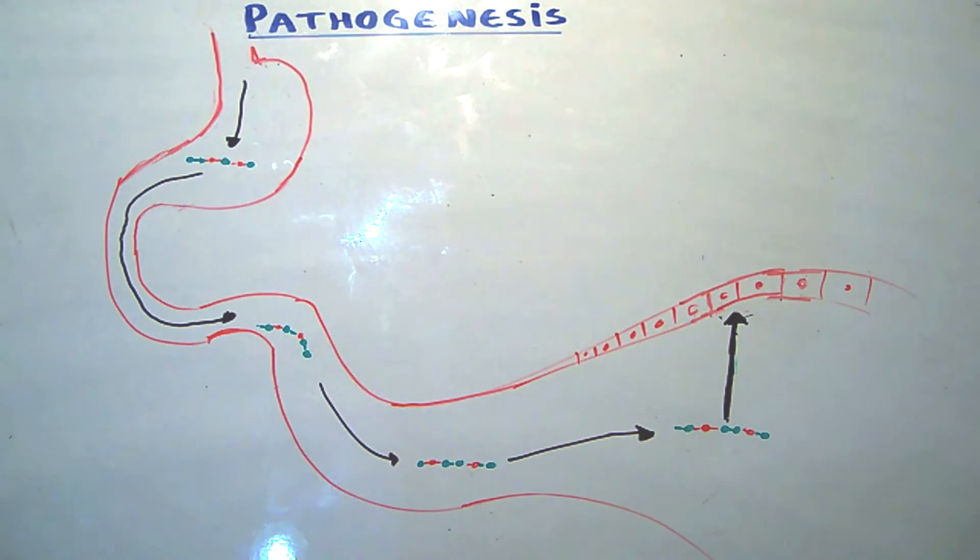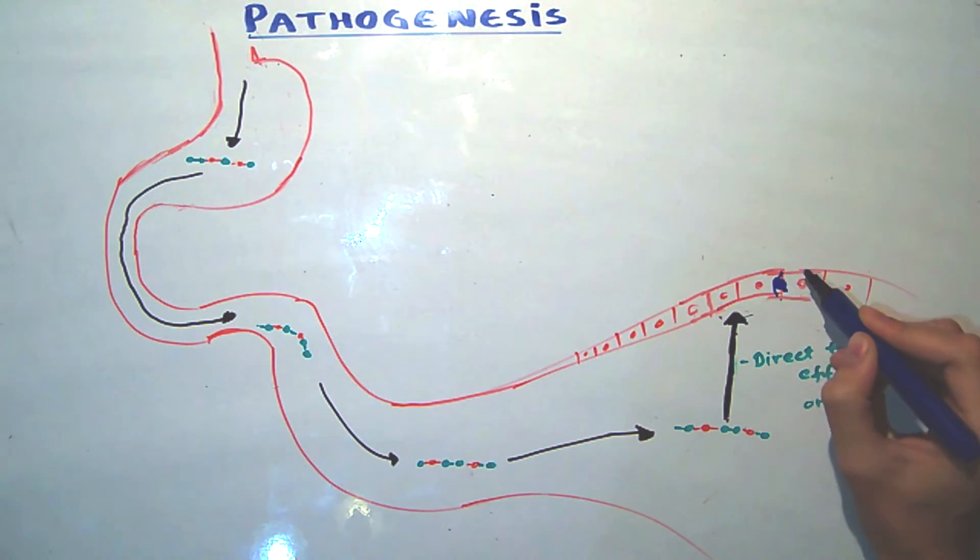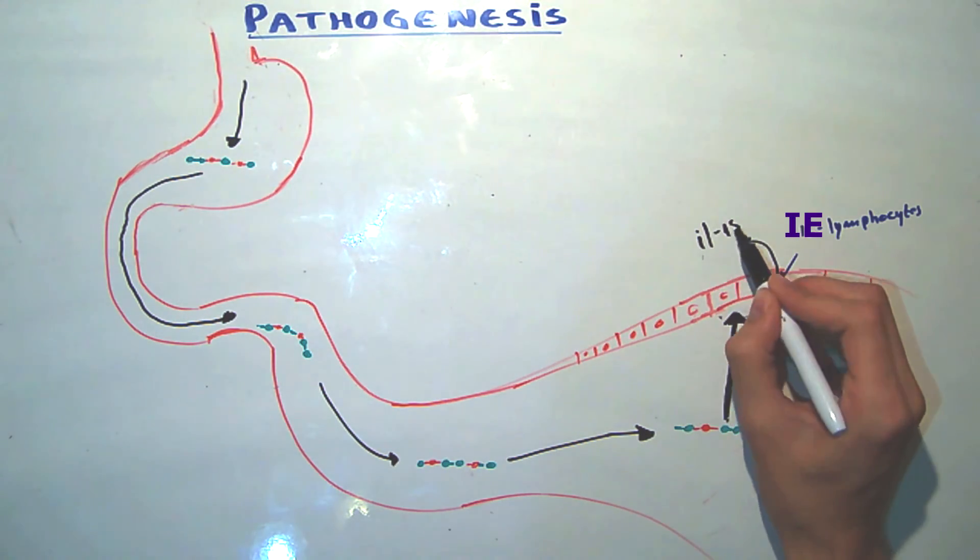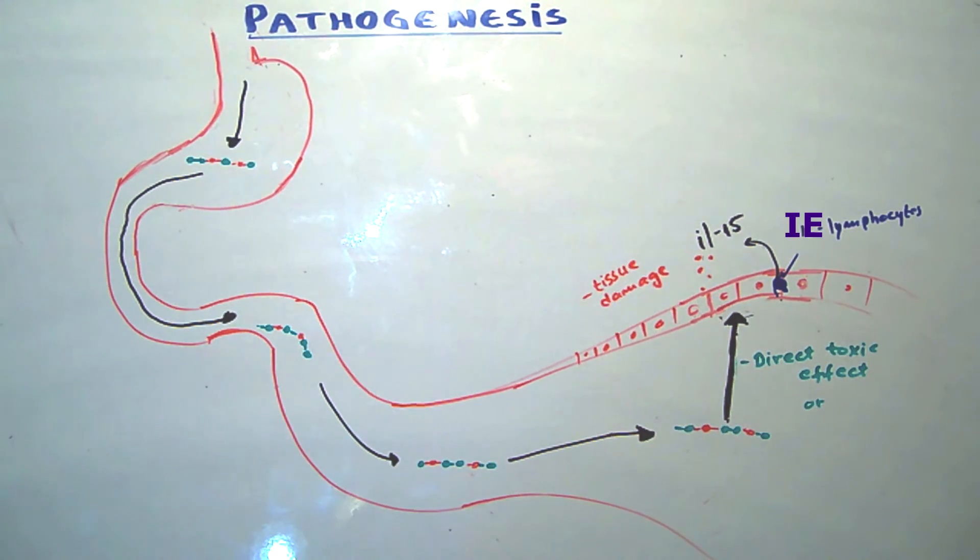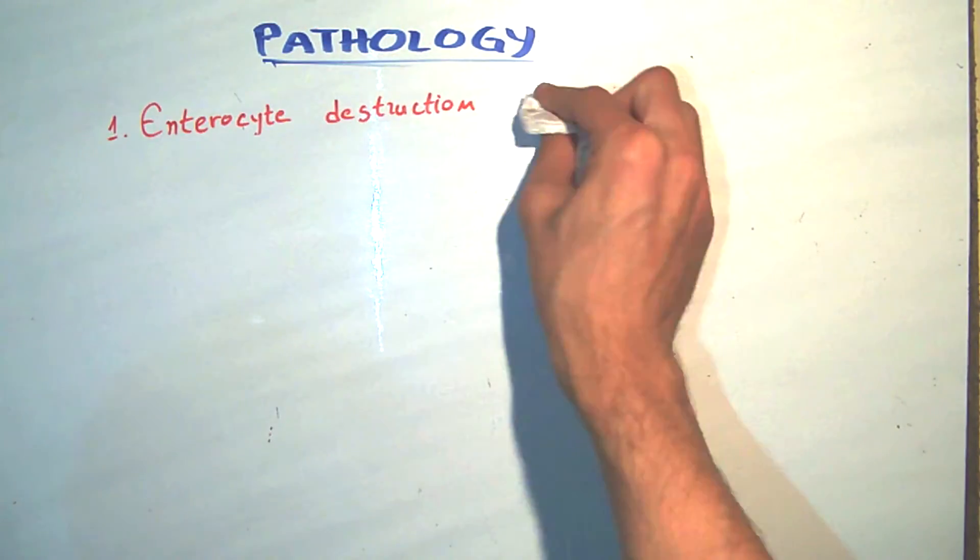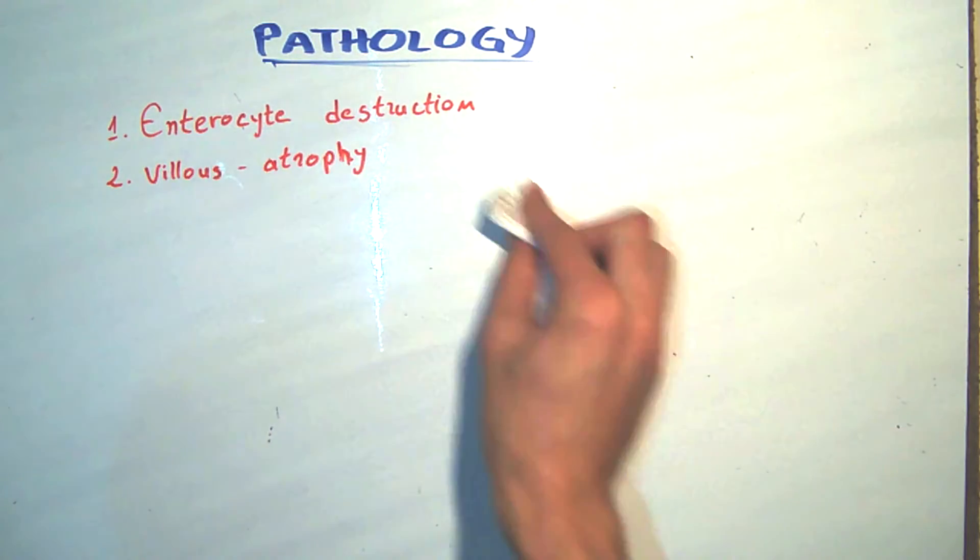There are some other pathways suggested, like the direct toxic effect of the gluten to the enterocytes, or the pathway that includes the intraepithelial lymphocytes, which bind with special receptors with enterocytes and release interleukin-15, which leads to tissue damage. The pathology has two main characteristics, and those are enterocyte destruction and villus atrophy.